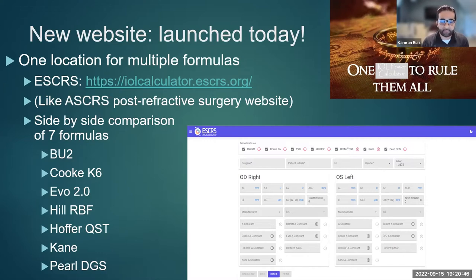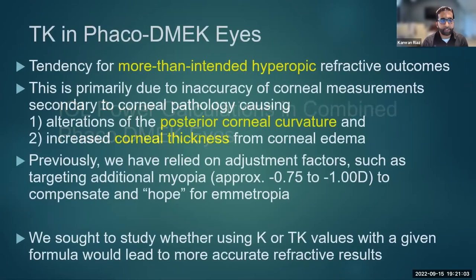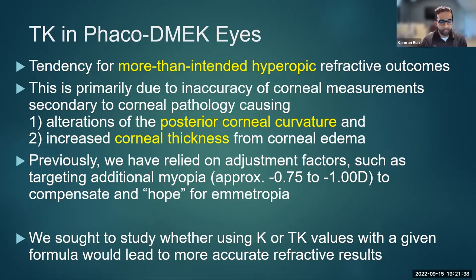This new ESCRS IOL calculator is hot off the press, launched today. It's a great resource rather than having to manually put information into many different websites. Now shifting to the three scenarios corneal surgeons frequently encounter. The first: how do we calculate IOL power when we want to do combined phaco-DMEK? There's a tendency toward more-than-intended hyperopic refractive outcomes, primarily due to alterations of posterior corneal curvature and corneal thickness from edema, leading to inaccurate corneal measurements. Previously we relied on targeting additional myopia of about minus 0.75 to minus one. We studied whether using K or TK values with a given formula would lead to more accurate refractive results.